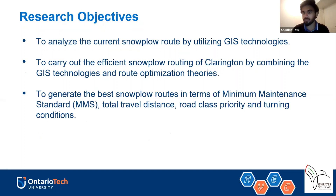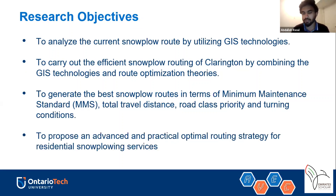The third objective was to generate the best snowplow routes in terms of minimum maintenance standard, which is time for each road class, total travel distance, road class priority, and road class turning and road conditions. The last objective was to propose an advanced and practical optimal routing strategy for residential snow plowing for actual real-world scenarios.